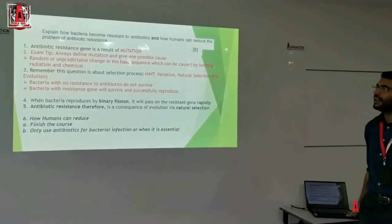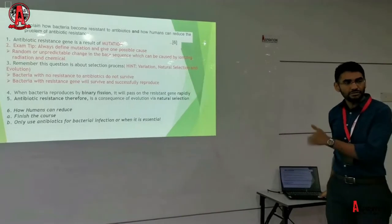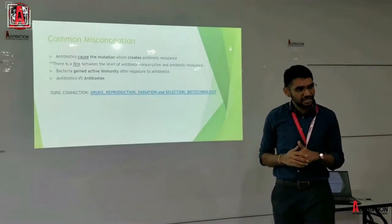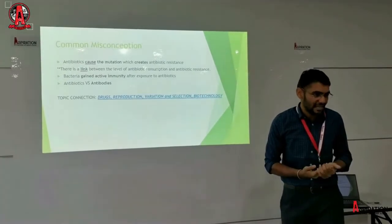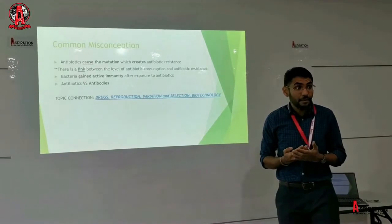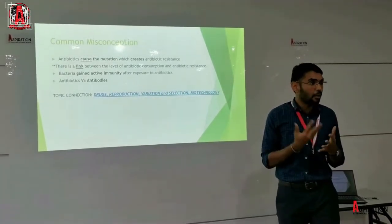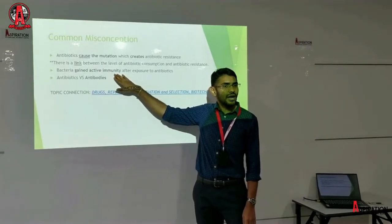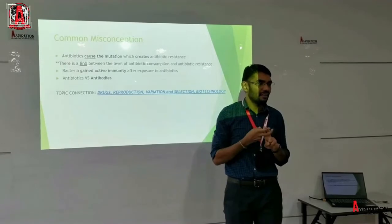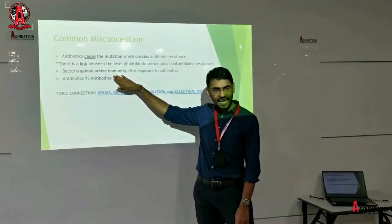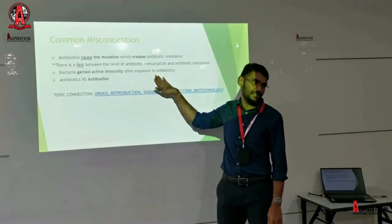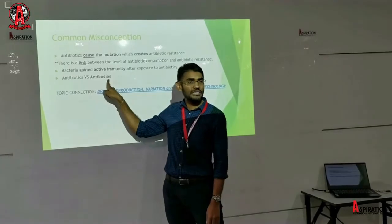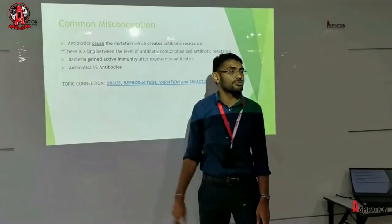What are the common misconceptions often produced in students' answers? A lot of times, students say that it is the antibiotic that causes mutation. But mutation is a random event — we do not know when or how it happened, but it is already present in their genes or in the population. Number two: bacteria can never gain active immunity — students are mixing two ideas from two different topics. Also, some students under exam pressure may accidentally write 'antibodies' instead of 'antibiotics'. Please choose your words carefully.